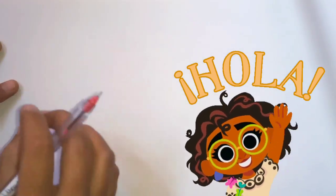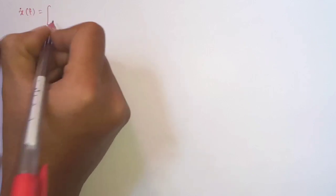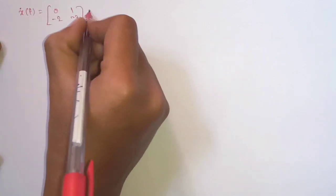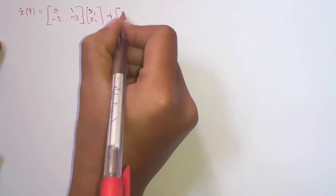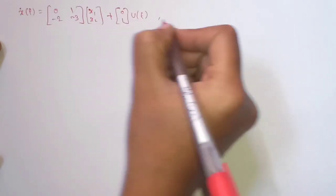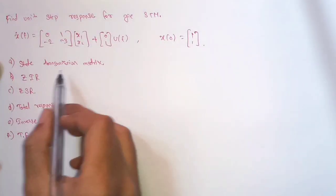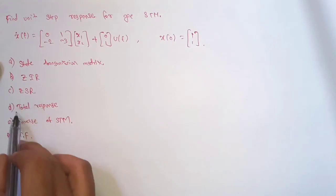Welcome back to the channel. In this video we are going to discuss the last topic of Unit 5 Control System — calculating the state transmission matrix, zero input response, and zero state response. We'll take one question to cover every topic. The question is: x_dot(t) equals a matrix times [x1, x2] plus Bu, with x(0) equal to [1, 1].